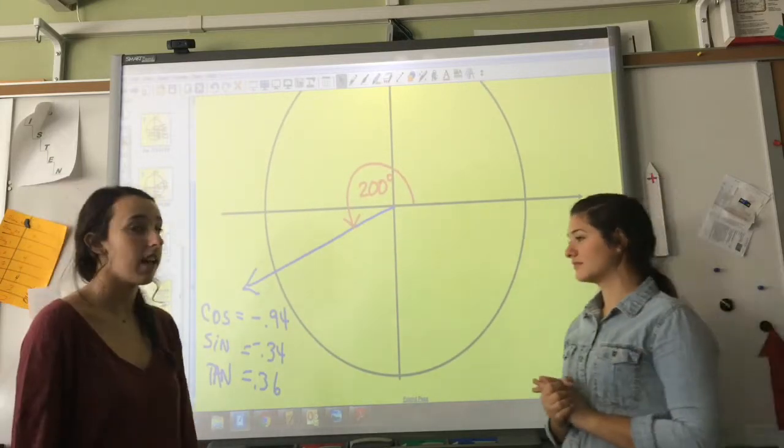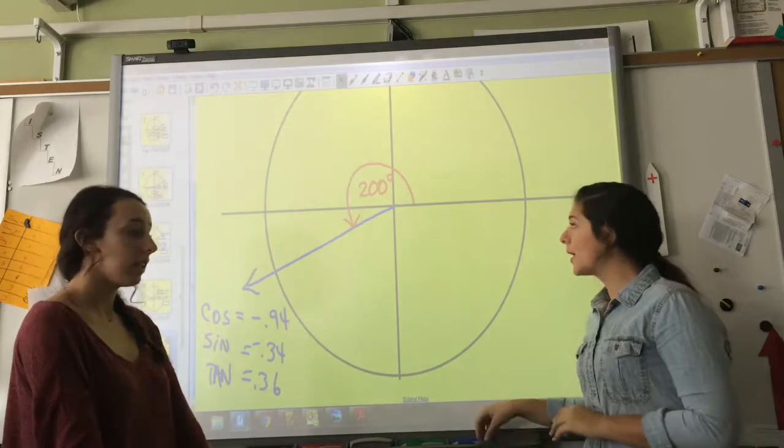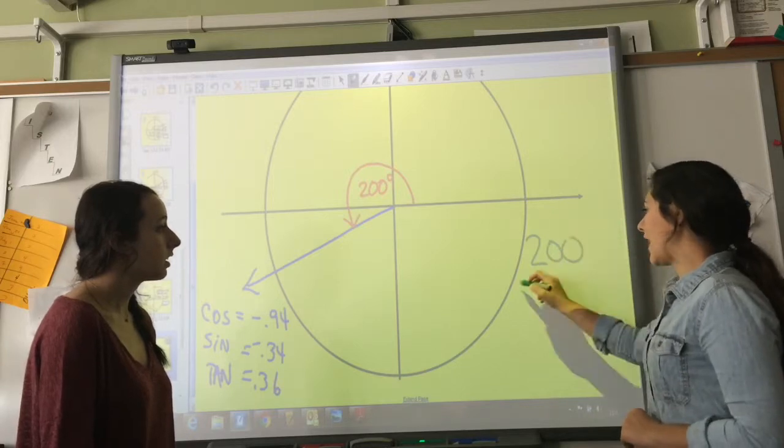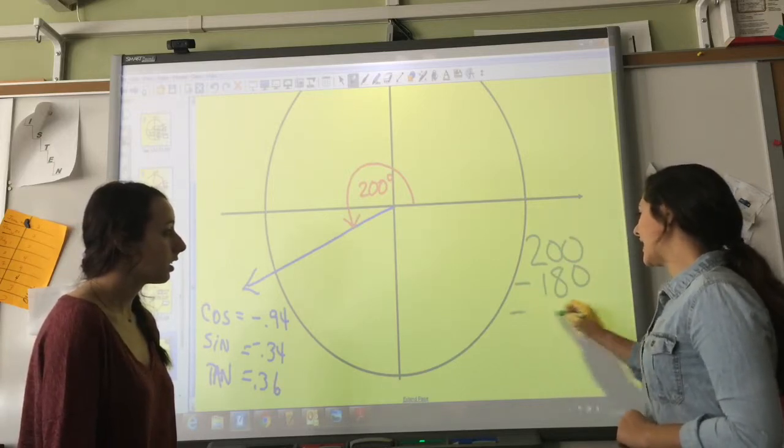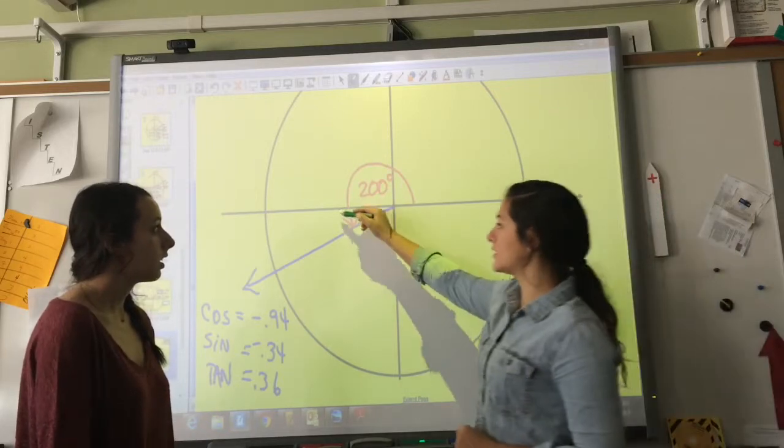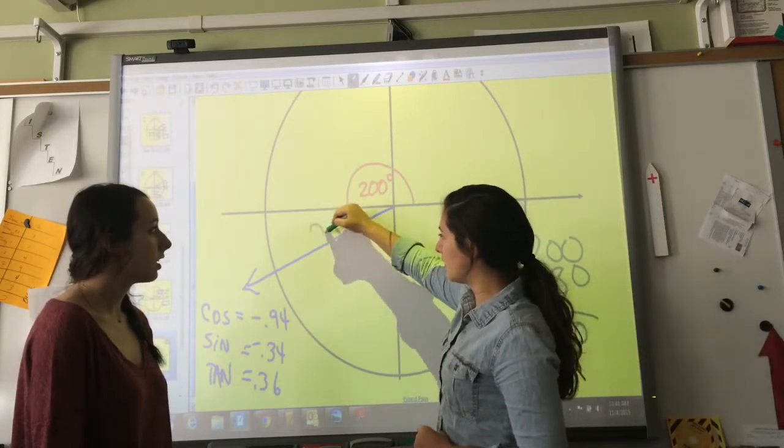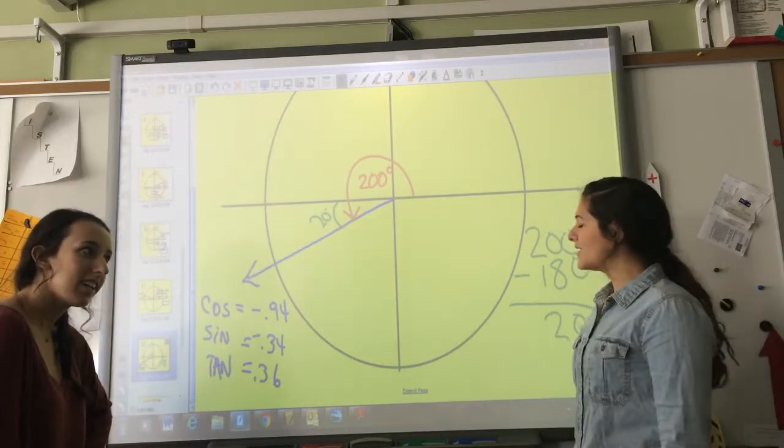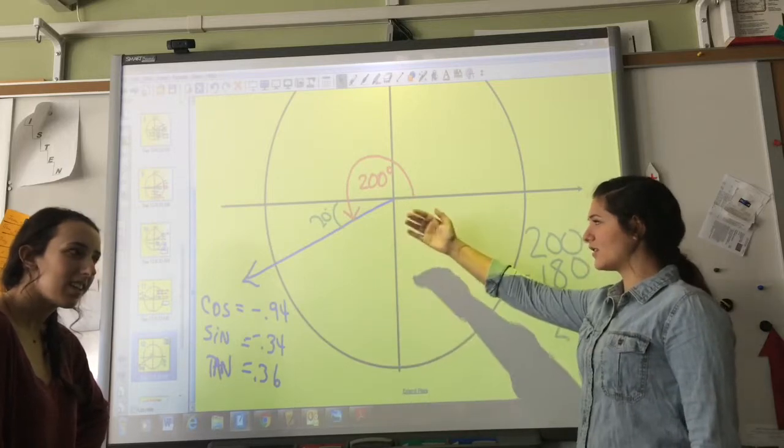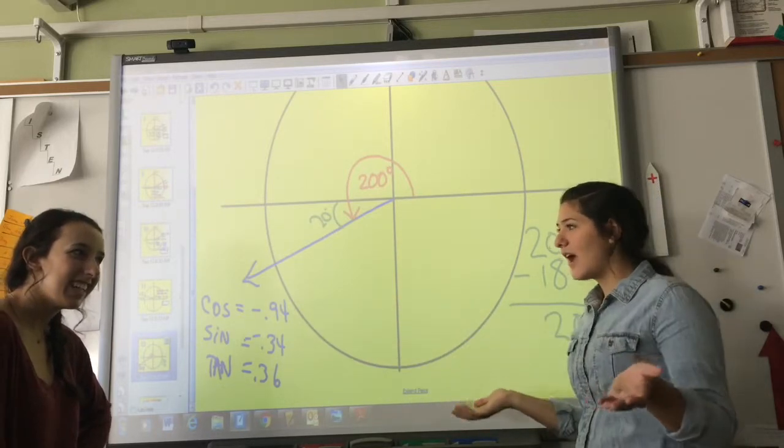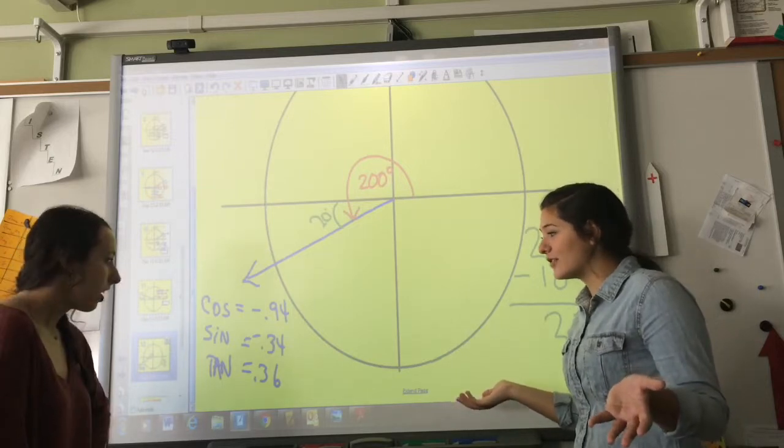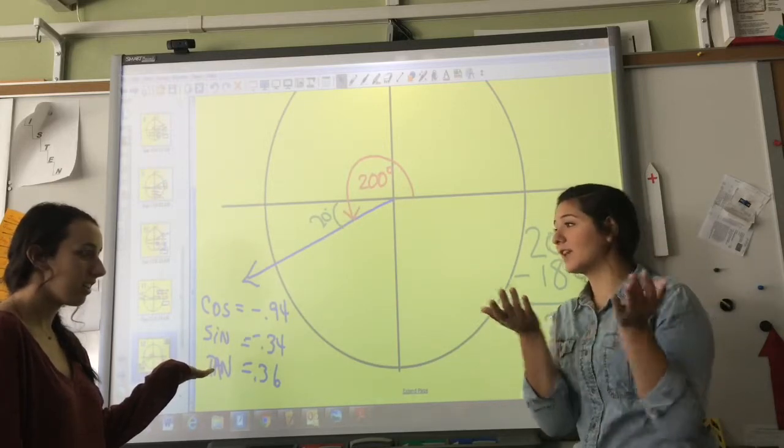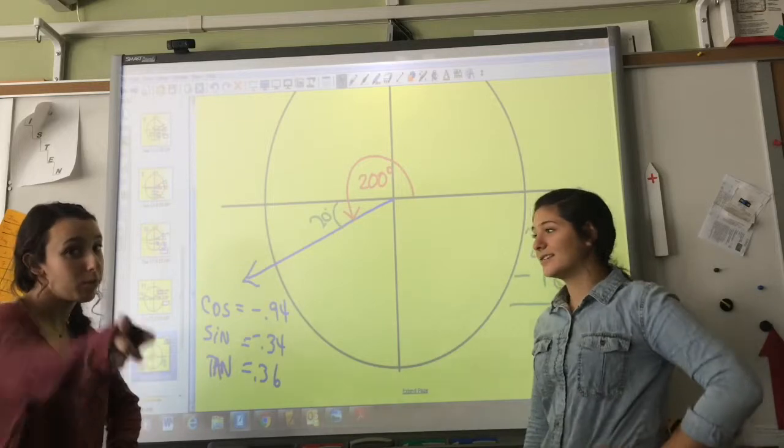So now we have the same thing, except at a 200 degree angle. So we take 200, and we subtract 180, and we get 20. So our reference angle is still 20. Now we do the same thing, except you say, what's the catch here? Sarah, I think we're in the third quadrant, which means everything's negative. But, then how is our tangent positive? Because if you have a negative divided by a negative, they cancel out, so you get a positive number. I hope you got it.